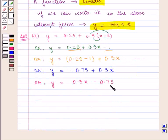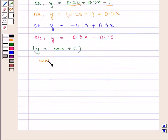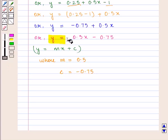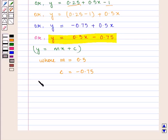Here we have written it in the form y = mx + c where m = 0.5 and c = -0.75. So we say that it is a linear relationship.